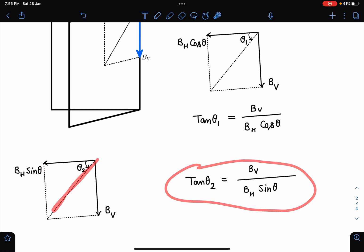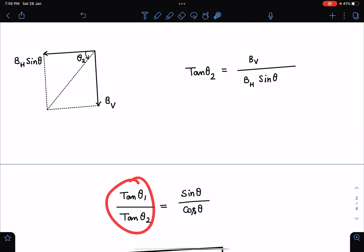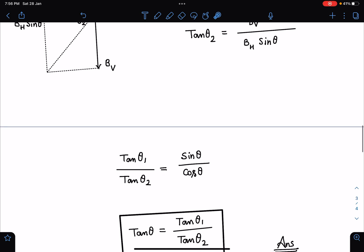So tan θ₂, the angle given was θ₂ here, so tan θ₂ becomes Bᵥ/(Bₕ sin θ). We have to calculate the angle of declination, that means the angle between magnetic meridian and geometric meridian.